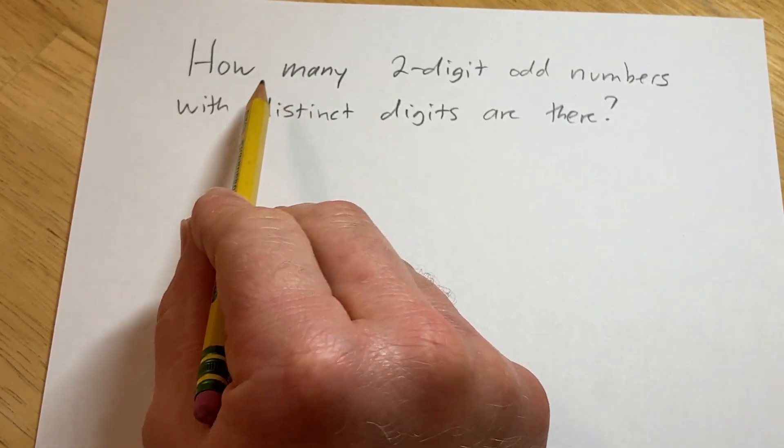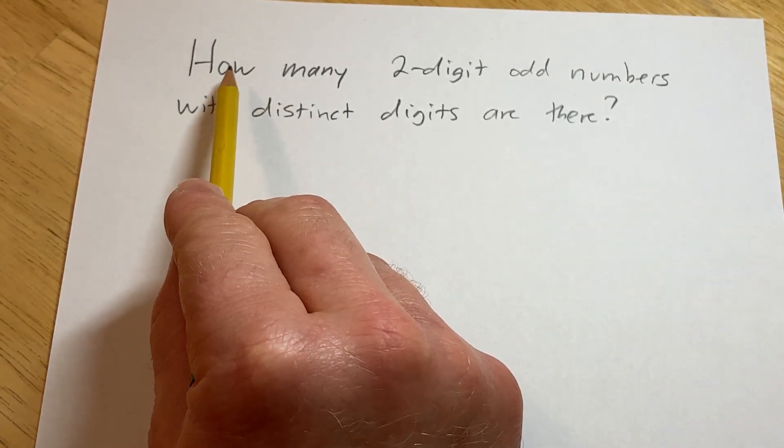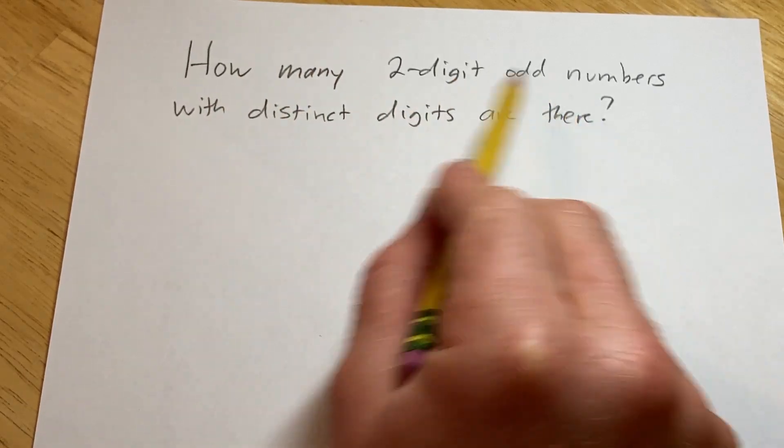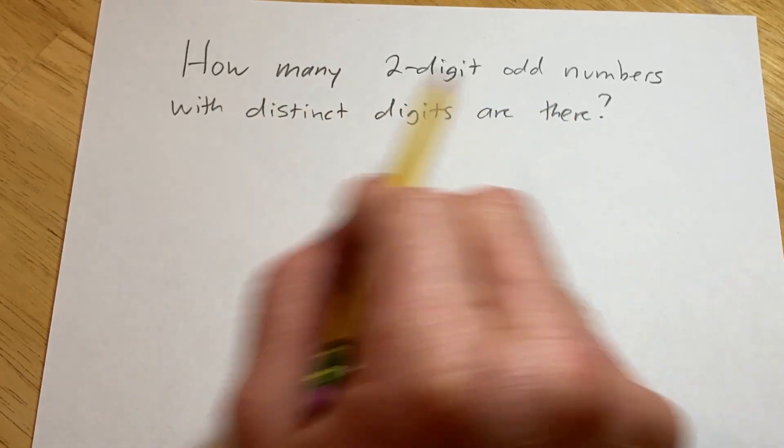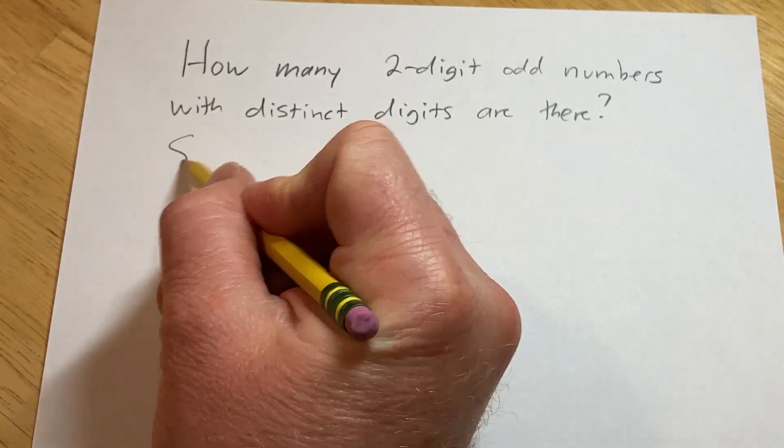Hi, in this video we're going to do a counting problem. The question says, how many two-digit odd numbers with distinct digits are there?